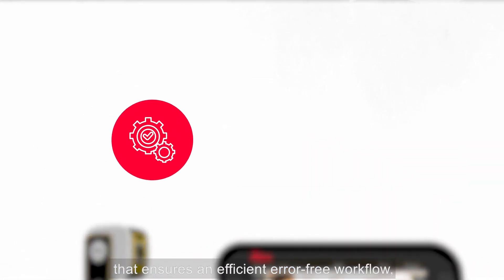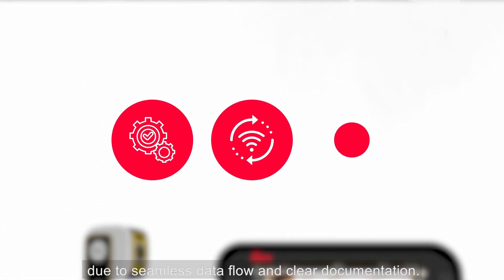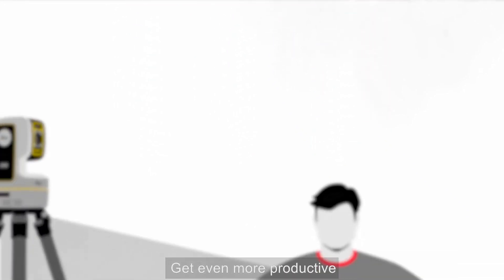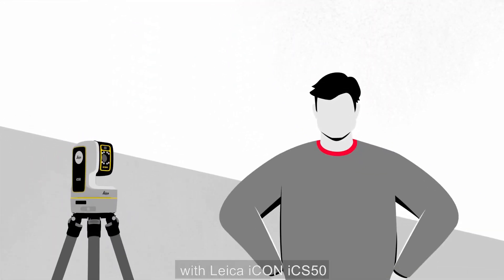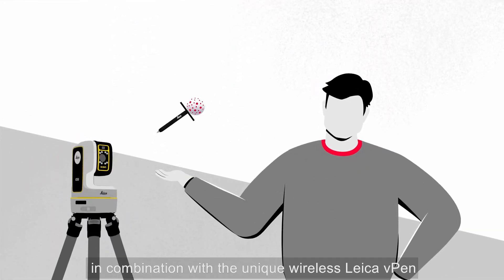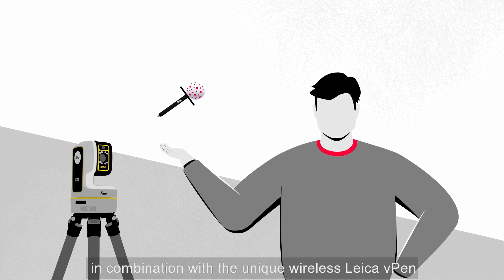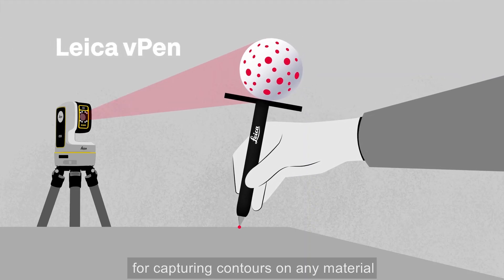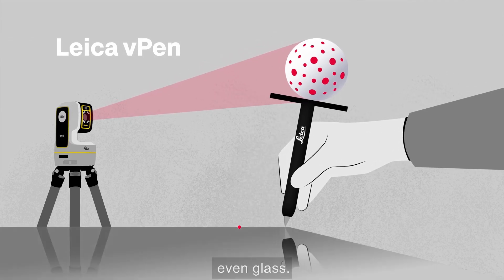Due to seamless data flow and clear documentation, get even more productive with Leica Icon ICS50 in combination with the unique wireless Leica V-Pen for capturing contours on any material, even glass.